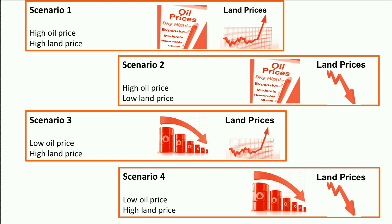In the eyes of the car dealer, Scenario 4 is a future he would like to see happening. In this scenario, car driving is highly attractive and constructing a new shop is relatively cheap. On the other hand, he hopes that Scenario 1 will not become real. But he has no influence on how the world will look like in the future. So what he is looking for is an alternative that is not just performing well in one of the scenarios, but is able to deal with as many different scenarios as possible — a solution that can stand the test of time.